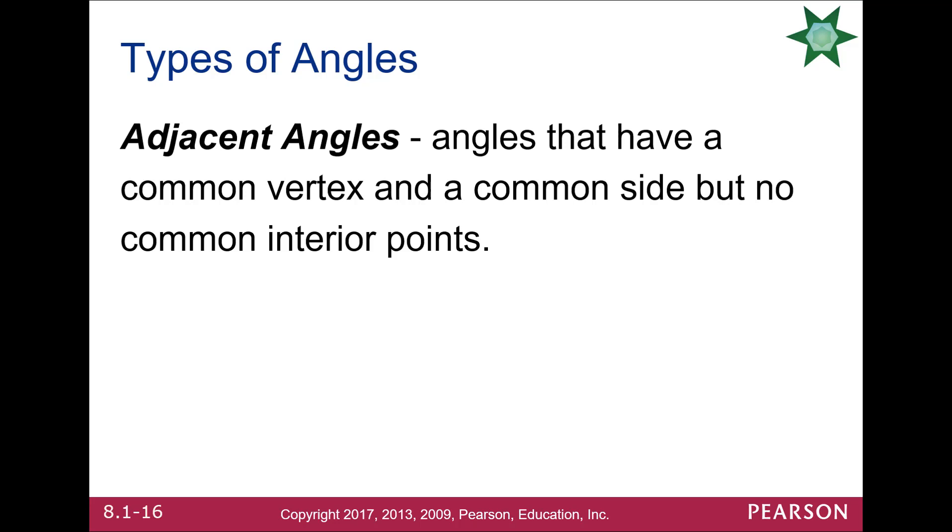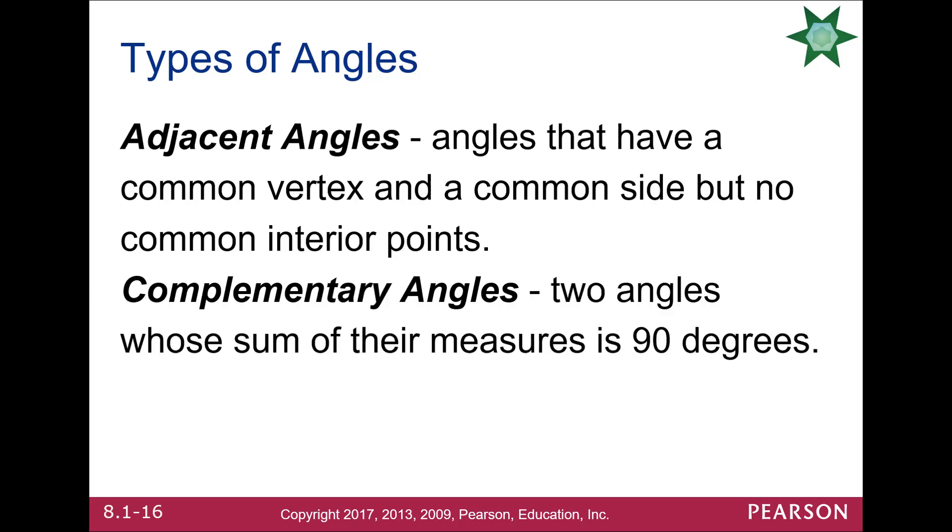If you have two angles that share a common side and vertex, they call them adjacent. They're basically, you know, stuck next to each other.